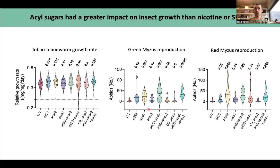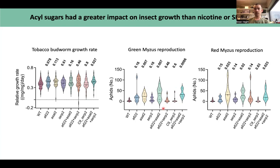For Myzus persicae, for both strains we didn't see any effect of nicotine — which was interesting because the nicotine-sensitive strain should have been sensitive to nicotine, but it didn't perform better in reproduction assays on nicotine mutants. In both strains, all the acyl sugar lines — the single, the acyl sugar-nicotine double, and the triple — showed aphids growing faster.